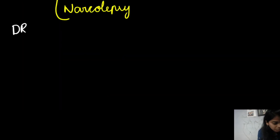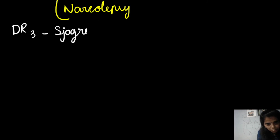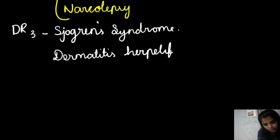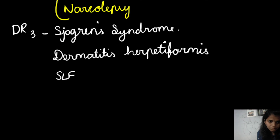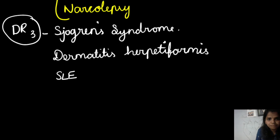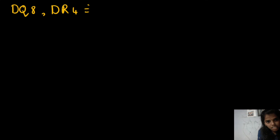HLA-DR3 is seen in Sjögren's syndrome, dermatitis herpetiformis (a type of pemphigus), and systemic lupus erythematosus (SLE).